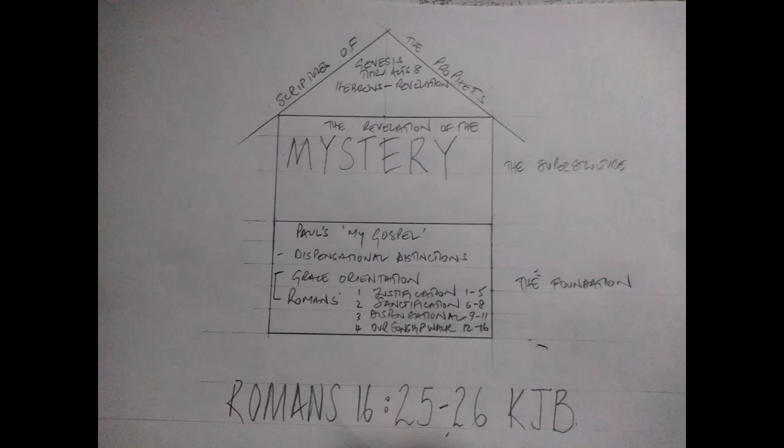And that's what a mature saint, thoroughly furnished unto all good works as it says in Second Timothy chapter 3, that's how you become a mature saint. You lay the foundation, then you build the superstructure, the walls all around it, and then you put the roof on top. Now Romans 16:25, I mean, you can't get any more plainer and simple than that.